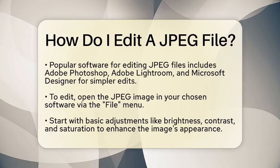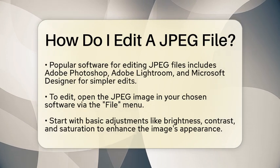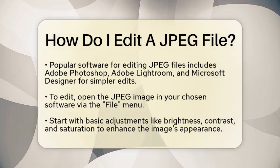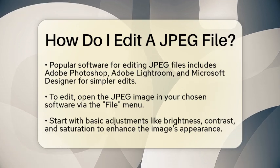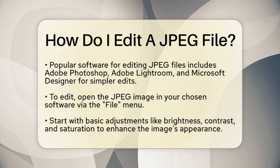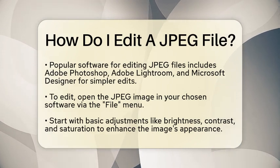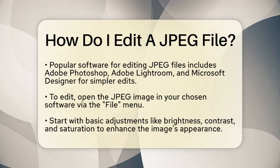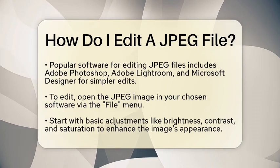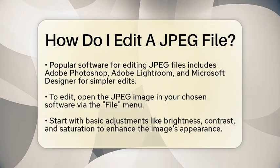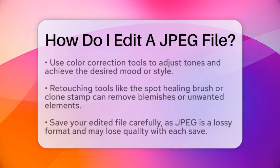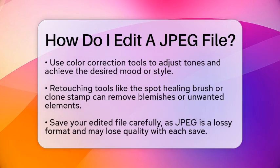Now, let's go through the steps to edit a JPEG file. First, open your JPEG image in your chosen software. In Adobe Photoshop, you can do this by clicking on the File menu and selecting Open. Next, you will want to make basic adjustments. Look for tools that allow you to change brightness, contrast, and saturation. These adjustments can really improve the overall appearance of your image.